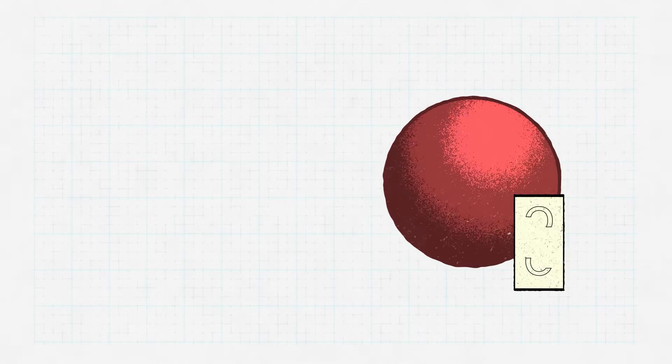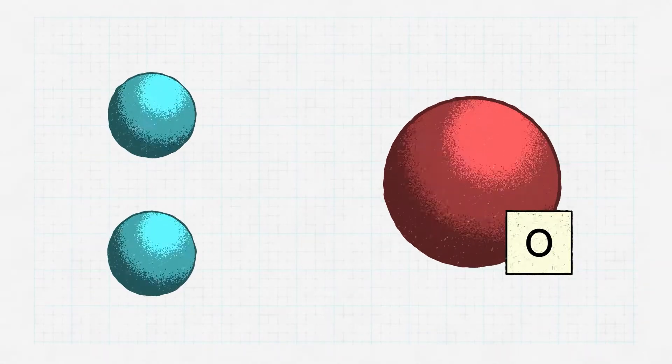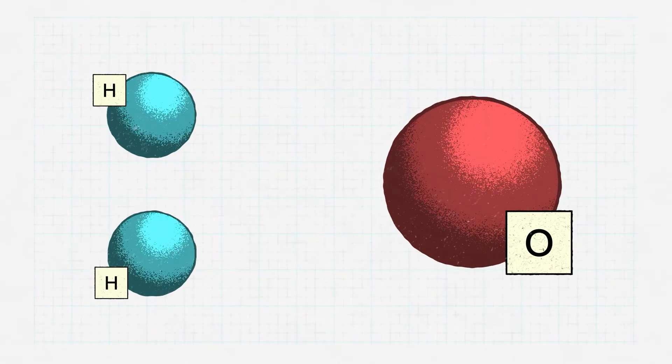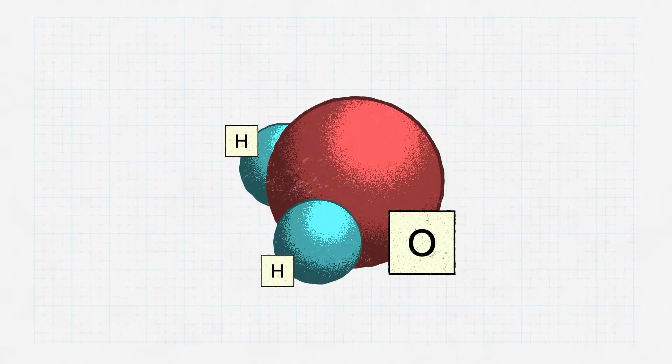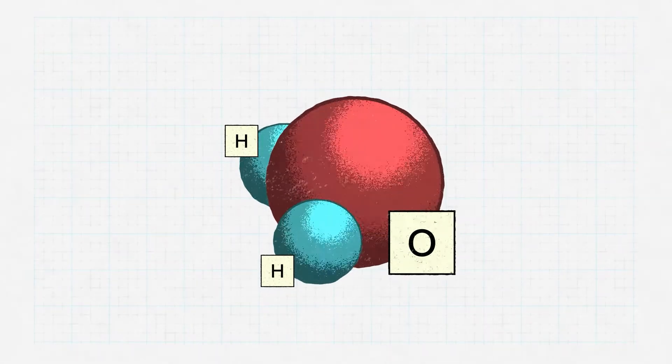Water is composed of oxygen atoms and hydrogen atoms. Everyone knows that, but how these two chemical elements interact with one another is the most interesting part. Water is a hydride, which just means that it's a chemical compound composed of hydrogen and some other element, in this case oxygen. But the boiling points of hydrides are weird. The general rule of thumb seems to be that the smaller the molecule, the lower the boiling point.